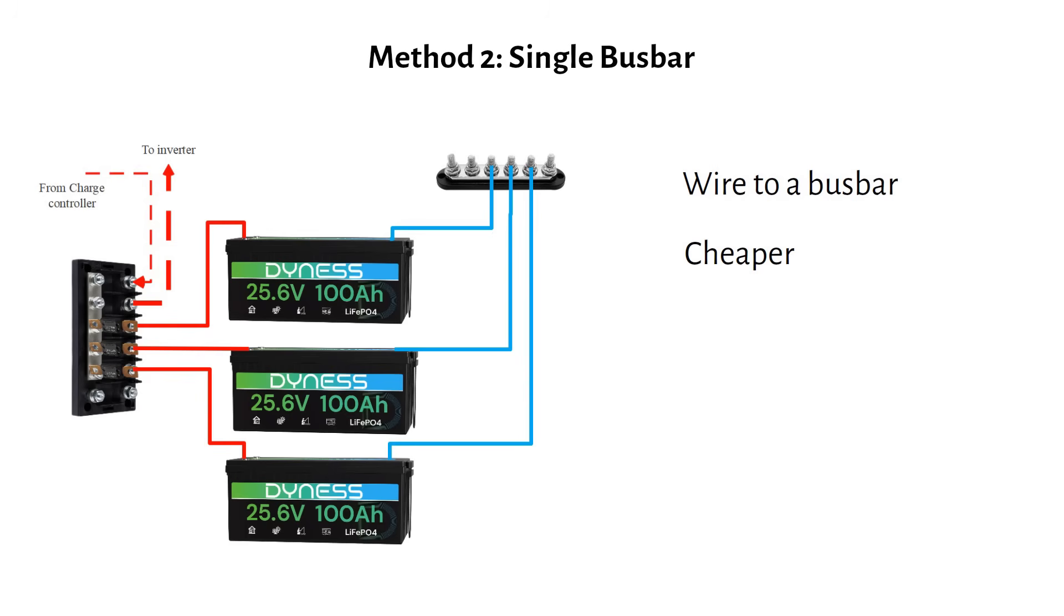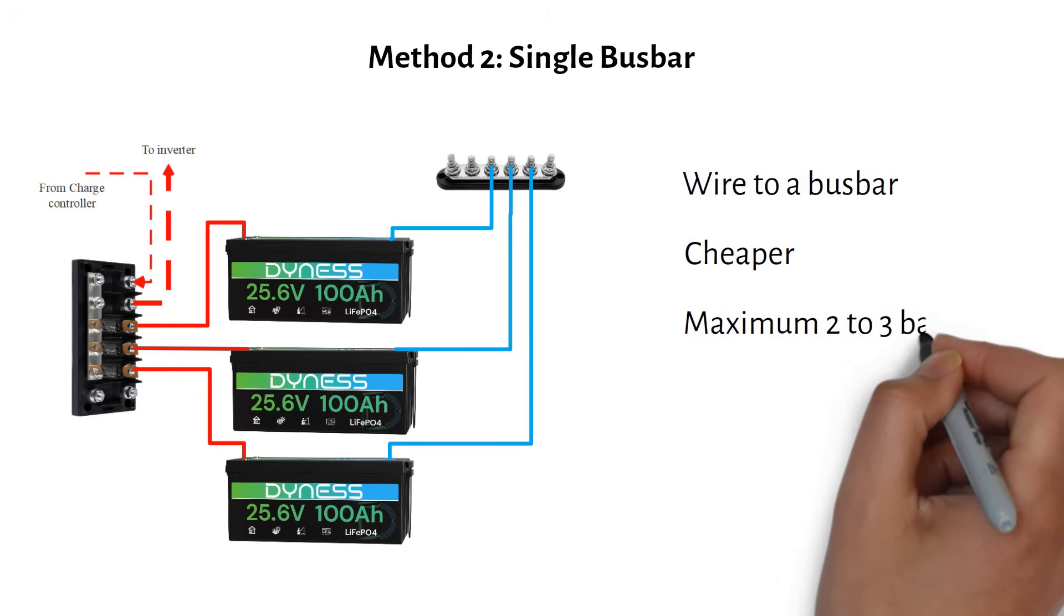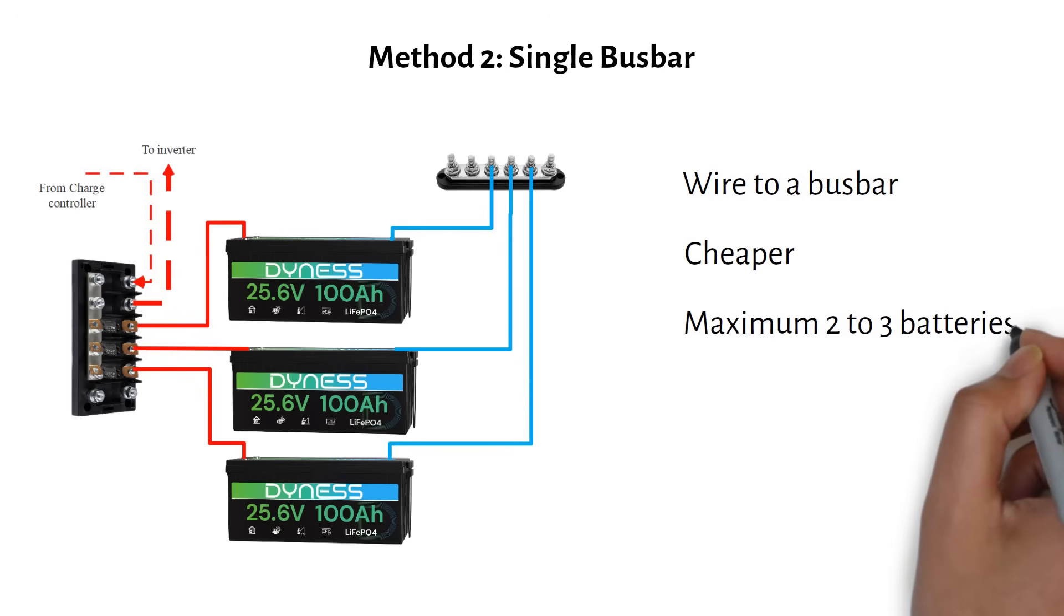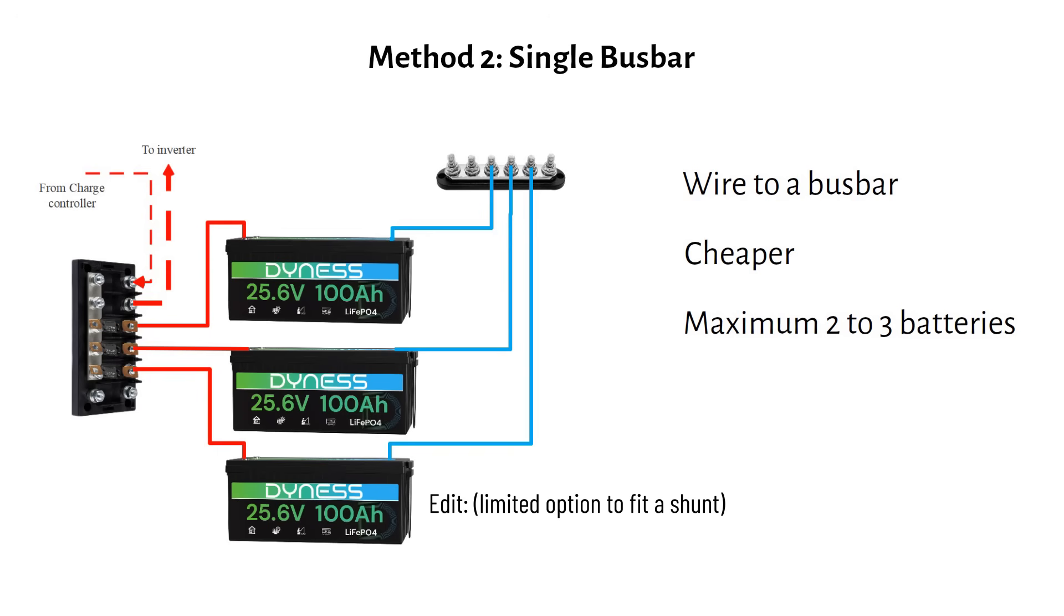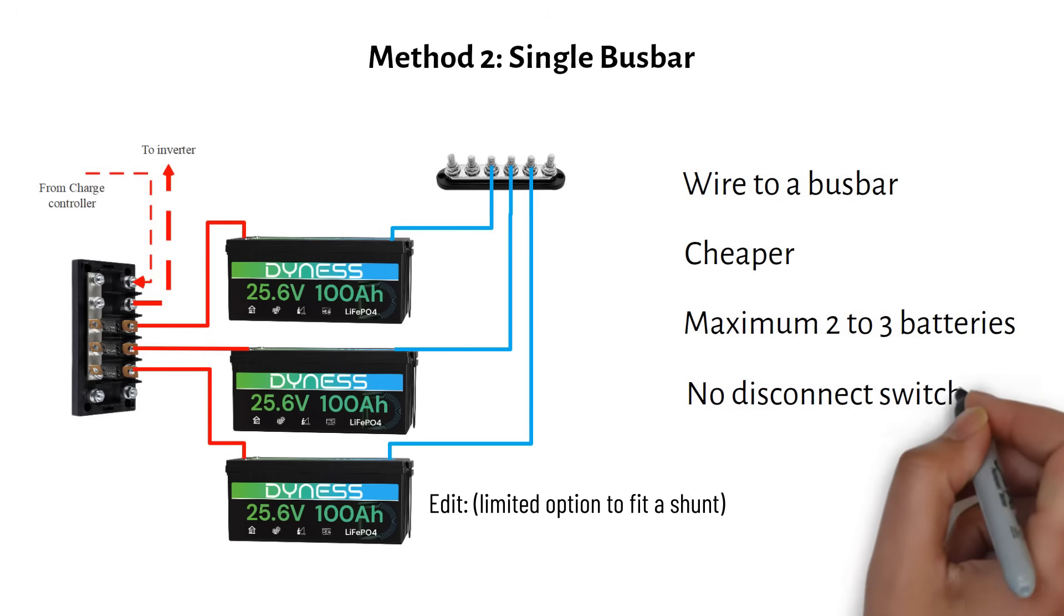However, this works best for a maximum of two or three batteries because this mega fuse bus bar only has five fuse positions. One for your inverter, one for a charge controller, and three for your batteries. If you need to add another device like a battery charger, you would need a separate fuse holder. In this example, you don't have a disconnect switch to disconnect your entire battery bank from the system.